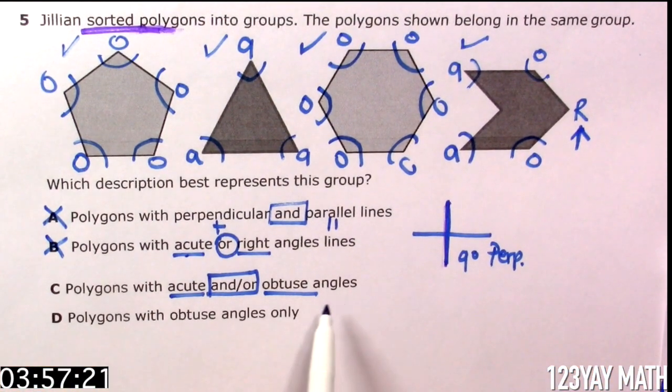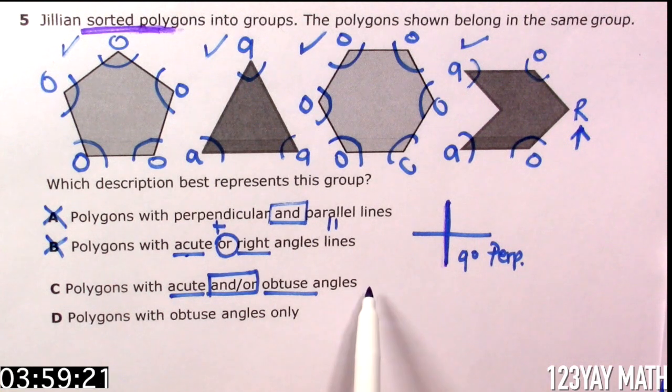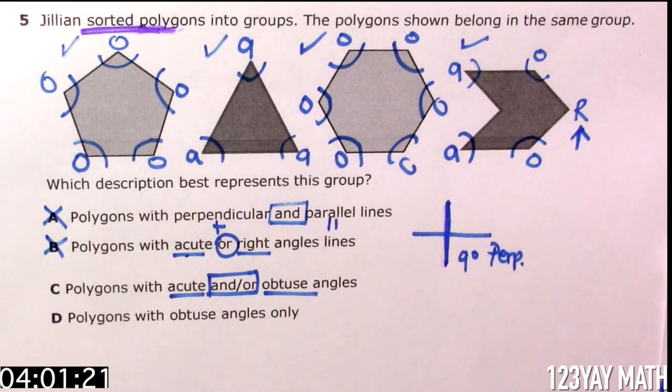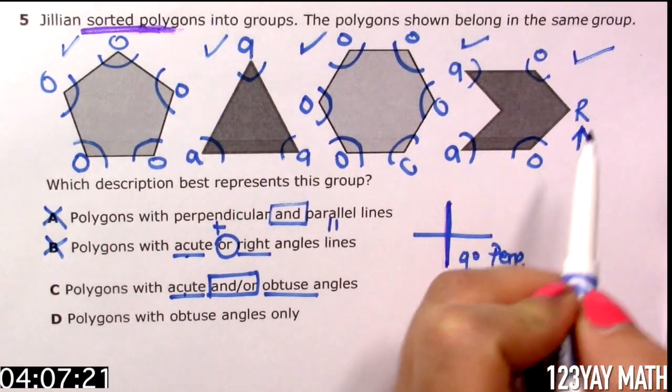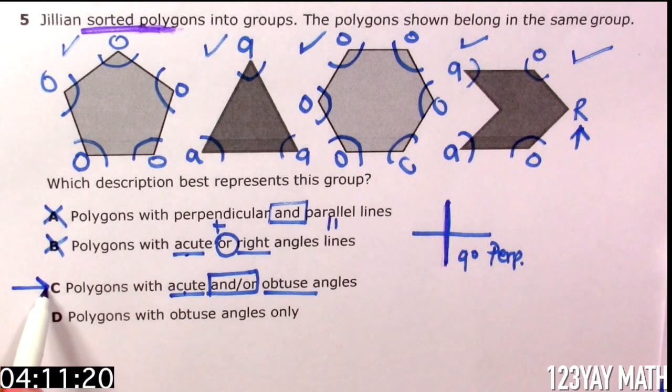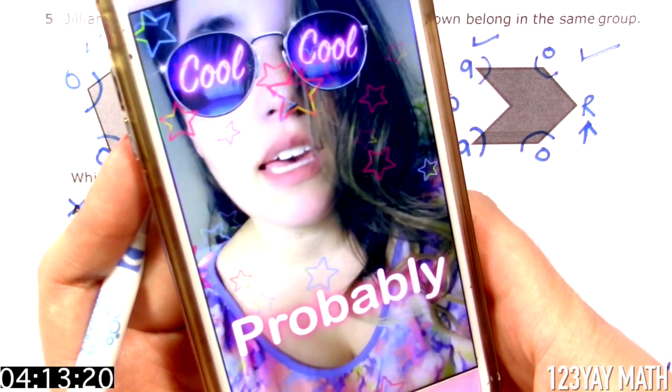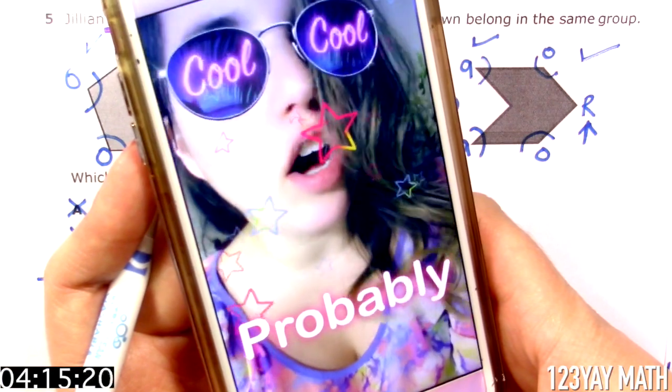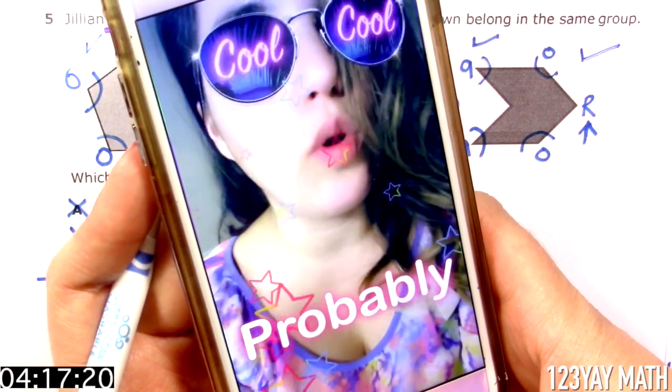No, because here it doesn't say only. If it had said only, this means it couldn't be it. But it's just telling me that it has acute and/or obtuse angle. So this also meets the requirement. Should we choose this one? That might be it. But I have to check all the other answers because that's a cool thing to do.